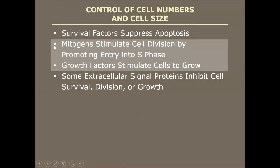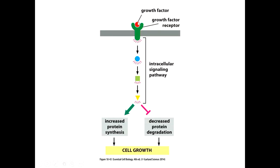Mitogens, mito for mitosis, stimulate cell division by promoting entry into the S phase — that's really all I'll say about that. Growth factors, as the name suggests, stimulate cells to grow. A growth factor binds to a receptor, triggers signaling pathways, and if you want to grow the size of a cell, that means more stuff inside it: more proteins and lipids. The broad outcome is that you make more protein and reduce the amount of protein you're destroying, so more protein is present.